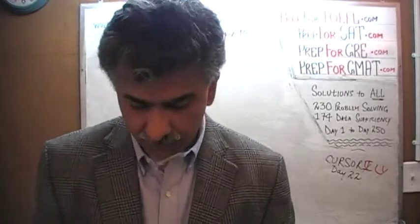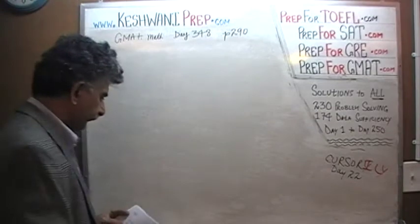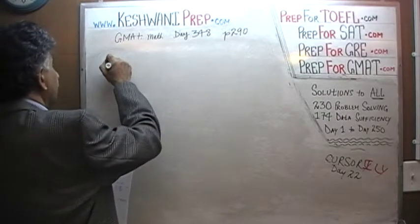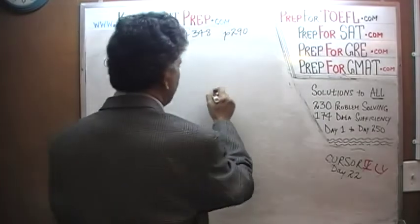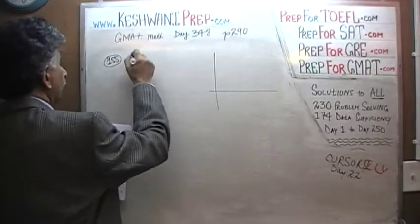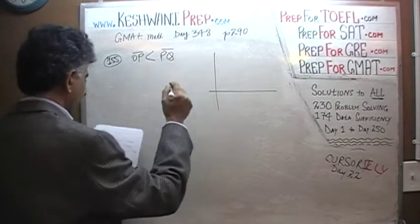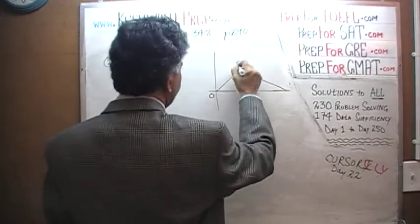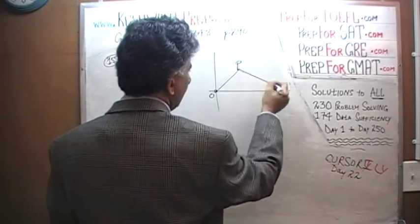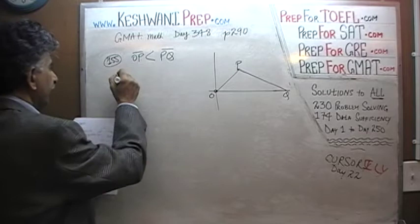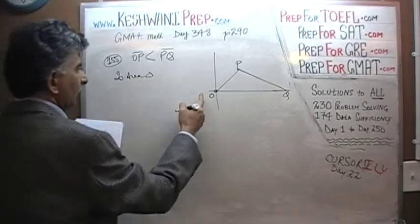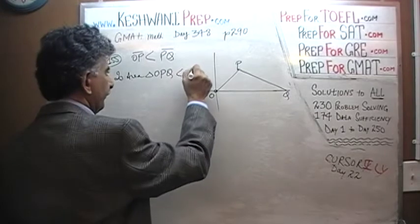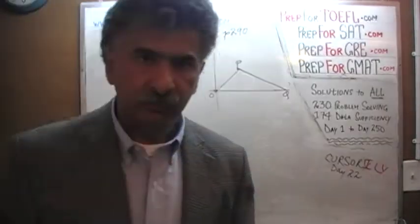The very first problem that you see there on the page — number 155. Problem number 155 on page number 290. We are given a triangle here and we are told that OP is smaller than PQ. The question simply is: is the area of triangle OPQ less than 48? Very simple, very straightforward question. Let's see what they tell us.